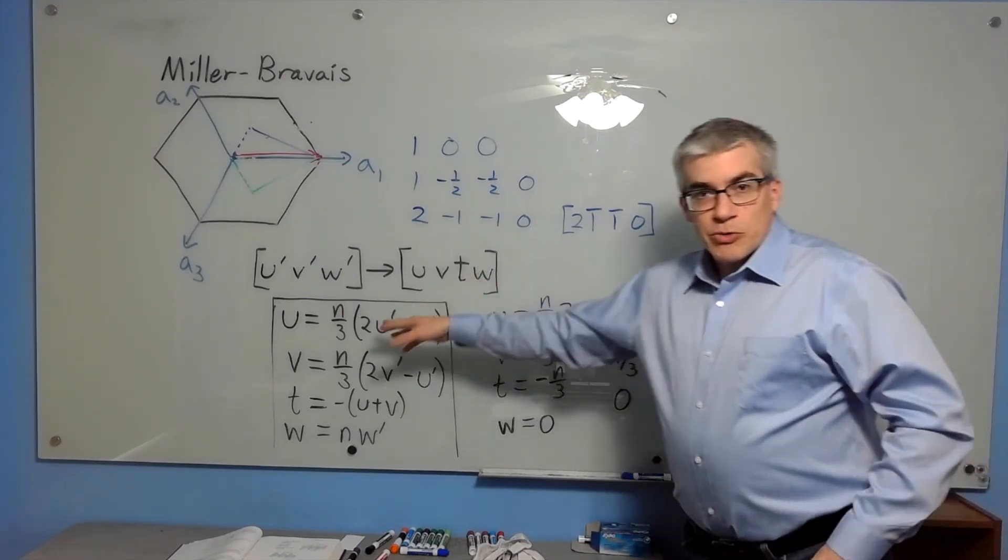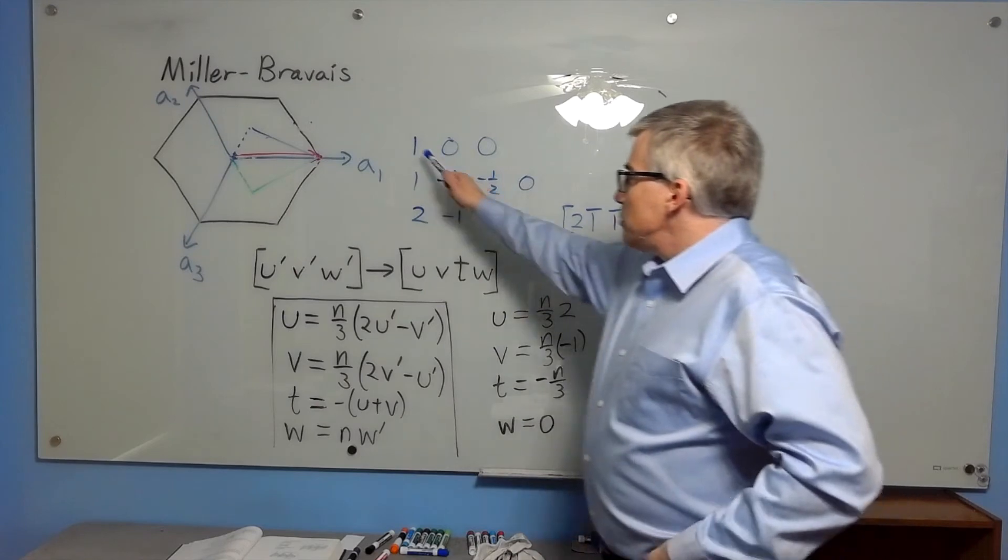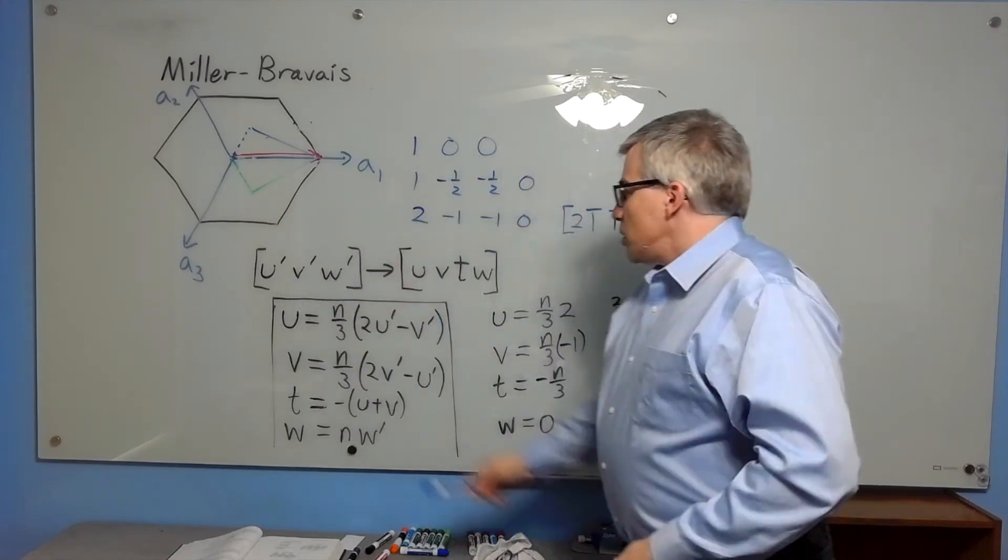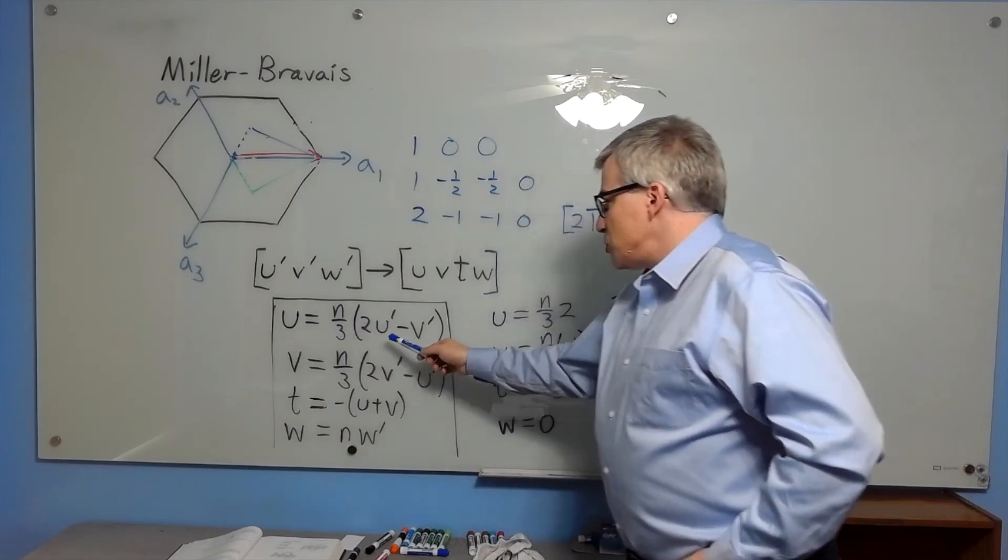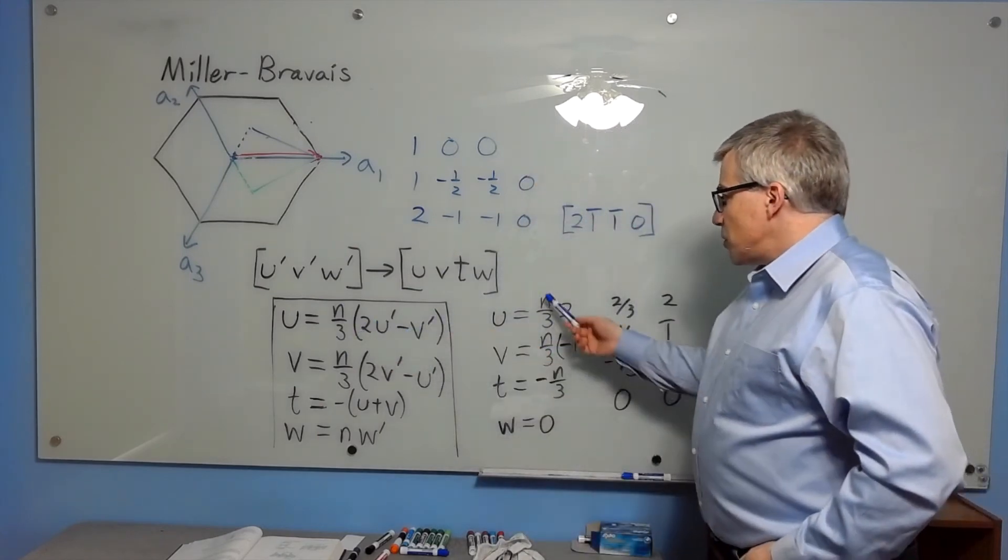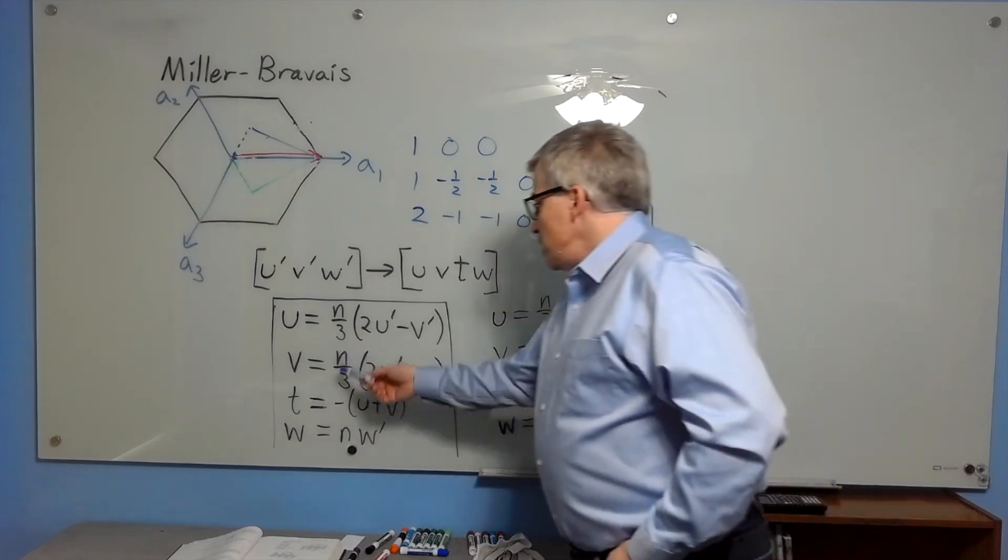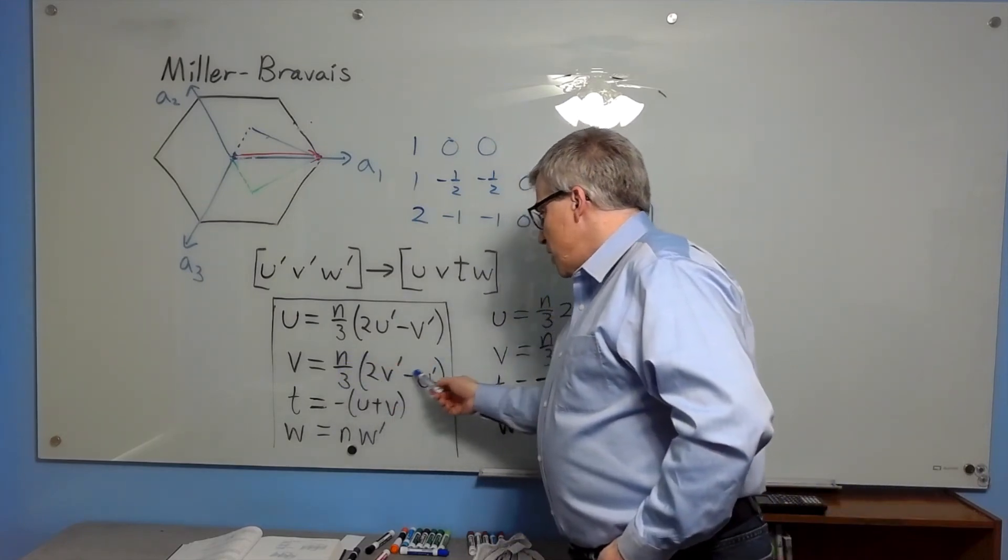Now, how does that work with the formulas? If we plug in 1, 0, 0 for u prime, v prime, w prime, u is n over 3 times 2 times 1 minus 0, so n over 3 times 2. The v is n over 3 times 0 minus 1.